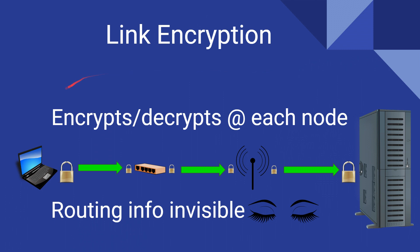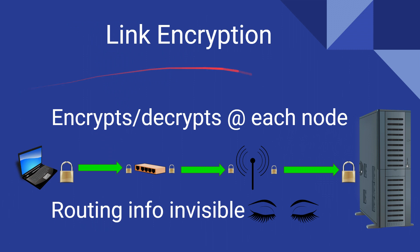The thing to remember about link encryption is that routing information is invisible. Everything is basically invisible to anyone who is trying to spy or tap into the wires.